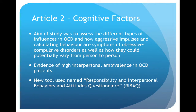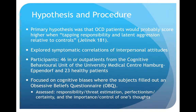This study shows evidence of high interpersonal ambivalence in OCD patients. It was generated in hopes of replicating and expanding older findings. What's interesting is that it used a new tool named the Responsibility in Interpersonal Behaviors and Attitudes Questionnaire, which every participant filled out. The researchers' primary hypothesis was that OCD patients would score higher when tapping responsibility and latent aggression, unlike what they perceived the controls would do.